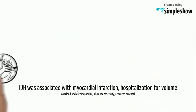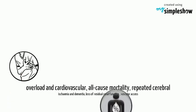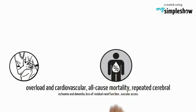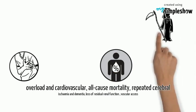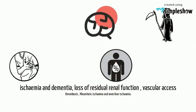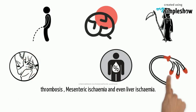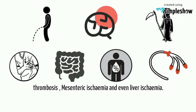IDH is associated with myocardial infarction, hospitalization for volume overload and cardiovascular and all-cause mortality, repeated cerebral ischemia and dementia, loss of residual renal function, vascular access thrombosis, mesenteric ischemia and even liver ischemia.